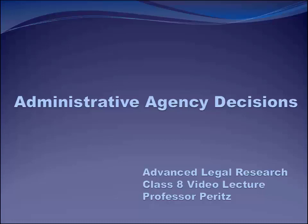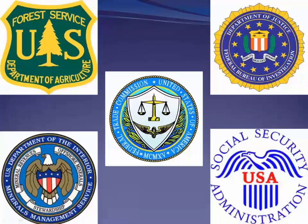This week we're going to finish up our discussion of administrative law. Last week we talked about rulemaking and administrative regulations. Regulations are a form of primary law and they have the same force as statutory law created by the legislature. Today we're going to focus on an entirely different form of federal administrative law: administrative agency decisions.